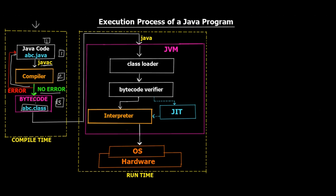The third stage is the bytecode stage. These first three stages — writing code, compiling, and generating bytecode — all happen during compile time, represented by the yellow dotted box. Now when we invoke the Java program to run the bytecode, we type java abc (just like java MyFirstClass), and this bytecode — abc.class — is loaded by the Class Loader.